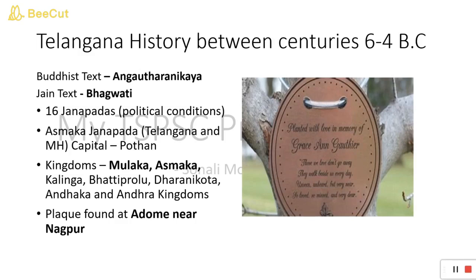Other than this, there were also kingdoms like Mulaka, Asmaka, Kalinga, Battiprolu, Andhra, and Andhaka. We are going to discuss the Mulaka, Asmaka, Andhaka, and Andhra kingdoms. Now let me tell you a story — during the time of Sri Krishna, there was a demon called Putana who tried to kill Sri Krishna during his childhood.